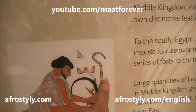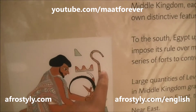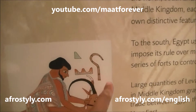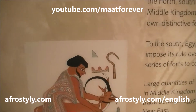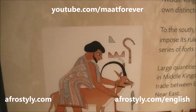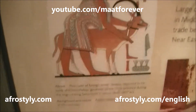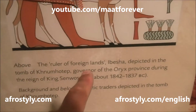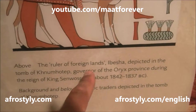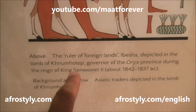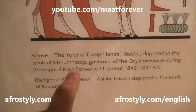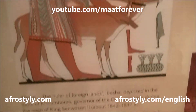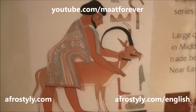This symbol is a transliteration for 'Heka' and I think that's 'Kasut,' and it's from the word 'Heka Kasut' that we get the Greek word 'Hyksos.' Above it says 'the ruler of foreign land.' Hibesha depicted in the tomb of Khnumhotep, dating to around the 18th century BC.